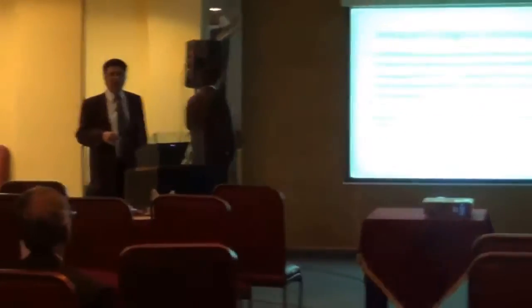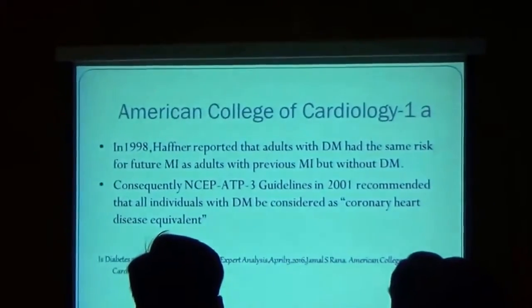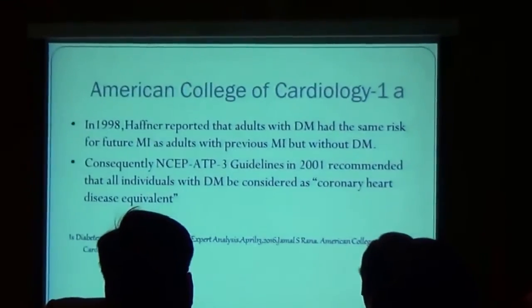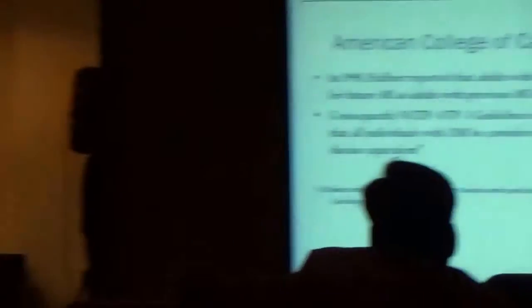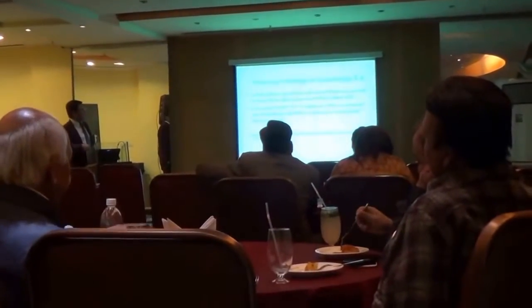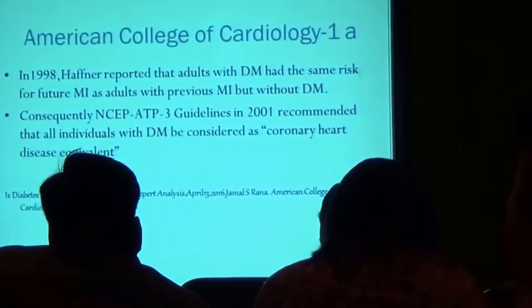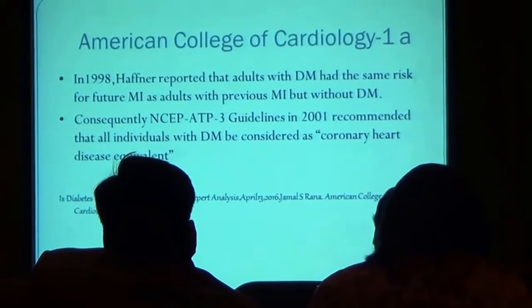The American College of Cardiology has taken note of the Haffner study and other studies. A review published ten months back states that in 1998, Haffner reported that adults with diabetes had the same risk for future MI as adults with previous MI but no diabetes. Consequently, in 2001, the National Cholesterol Education Program Adult Treatment Panel 3 guidelines recommended that all individuals with diabetes be considered as coronary heart disease equivalents.